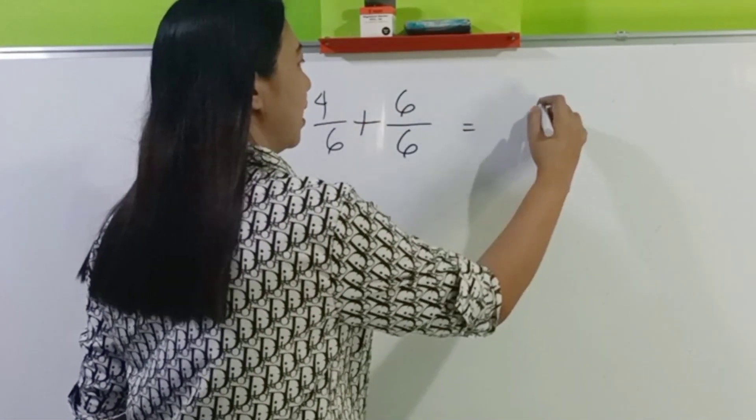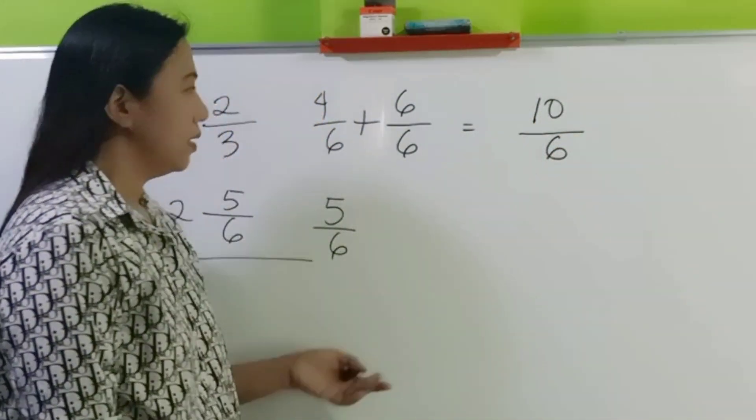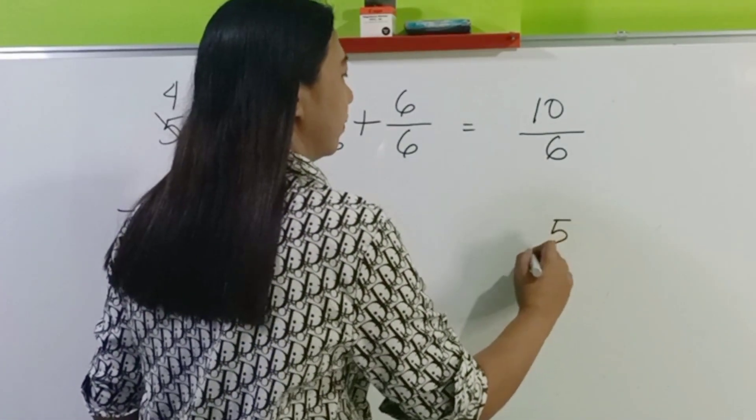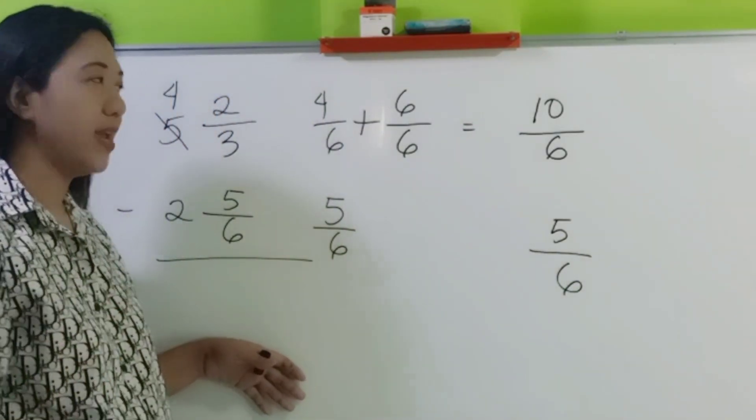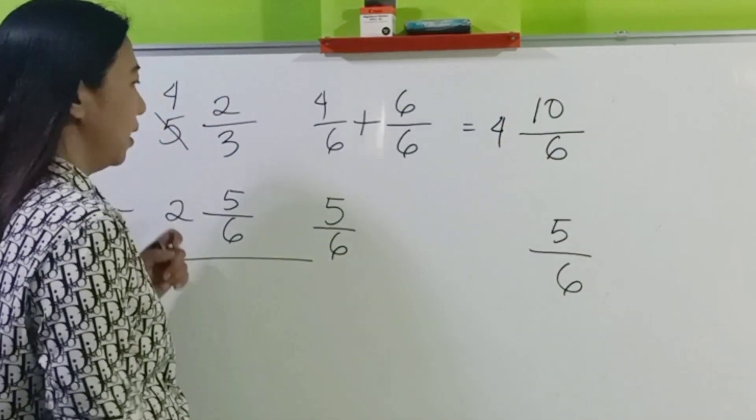Next, copy the subtrahend. And then how about the whole numbers? Do not forget. So this becomes 4 and then 2.